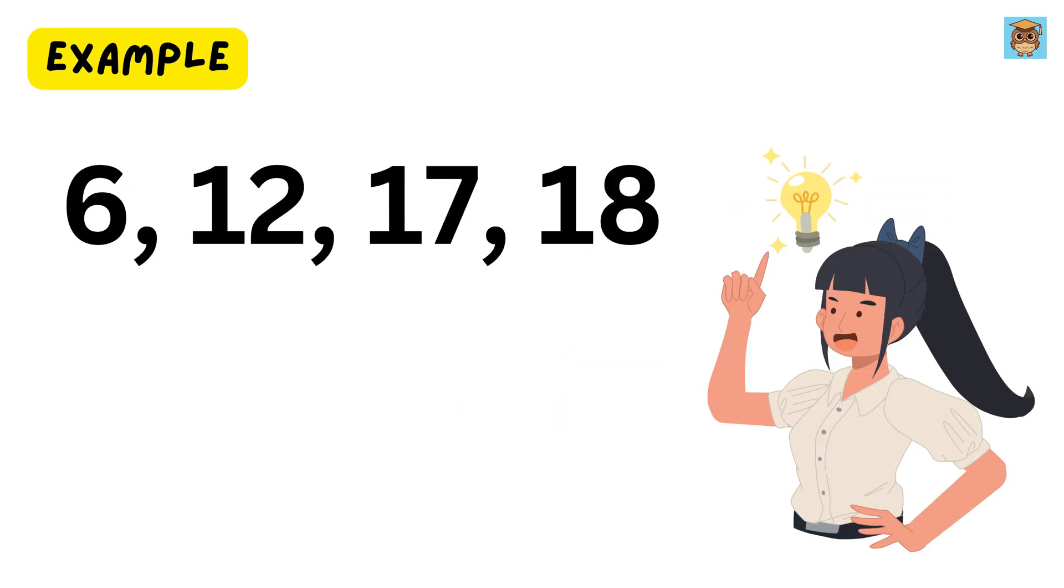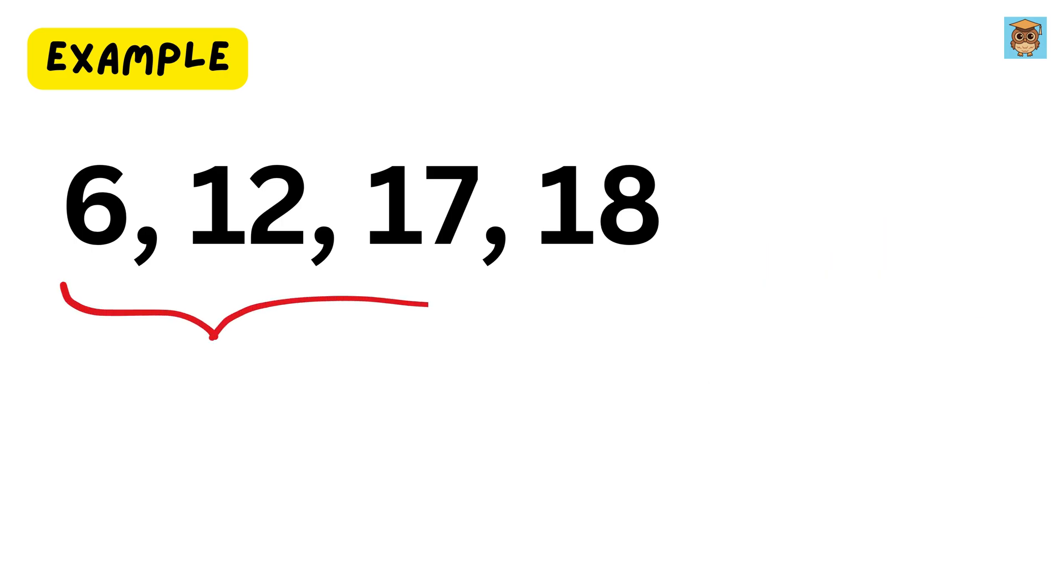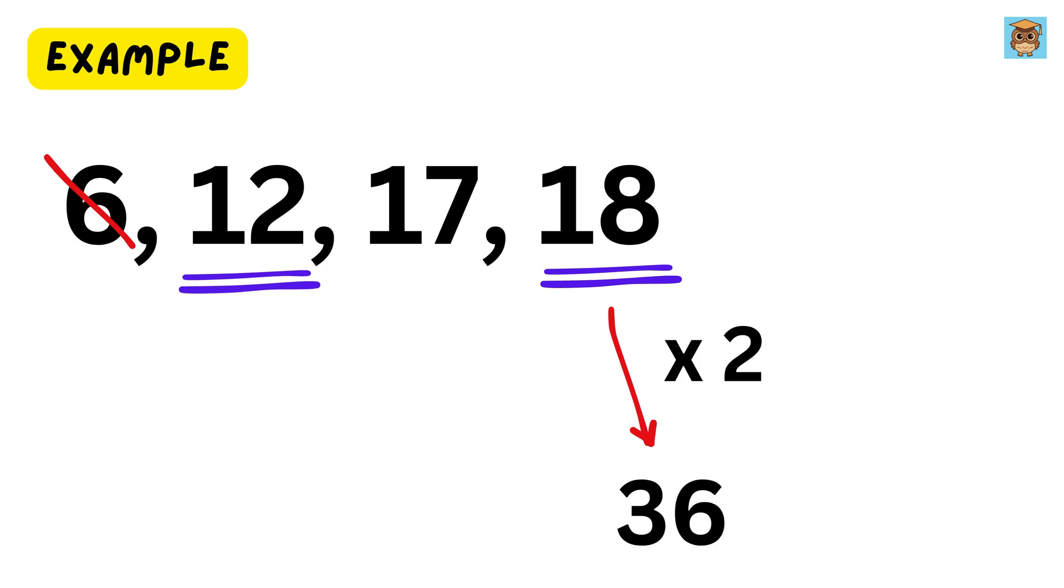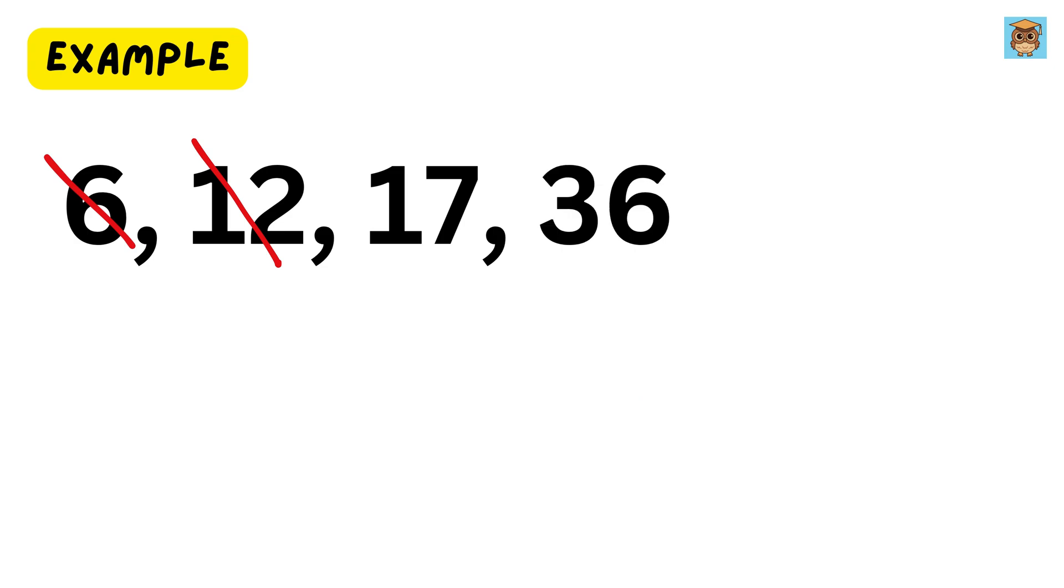Finally, let us do one tough example, which will be a mix of all the tricks we have learnt till now. Suppose we have numbers 6, 12, 17, and 18. What will be its LCM? The biggest number is 18. It is not divisible by 17 and 12, but it is divisible by 6, so we will cancel this 6. Now, consider this 12 and 18. If I multiply 18 with 2, we get 36, right? And this 36 is divisible by 12. So, cancel this 12 and we are left with 36 and 17.